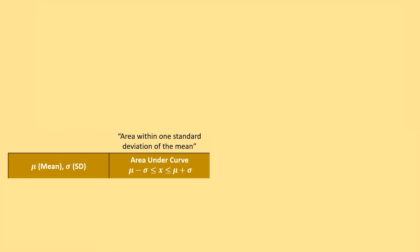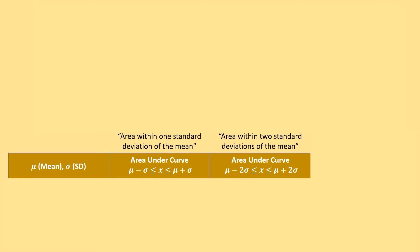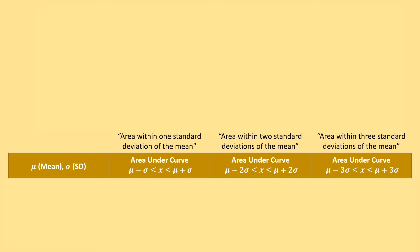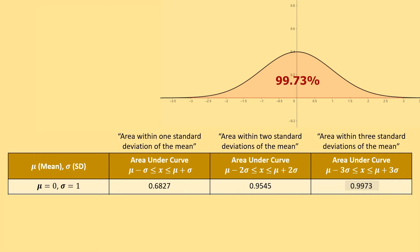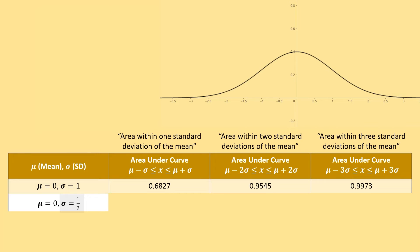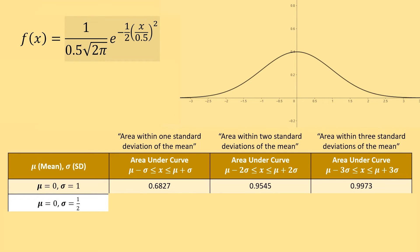Let's make a table where we vary our mean and standard deviation. The first column shows the mean and SD; the second, third, and fourth columns show the area within one, two, and three standard deviations of the mean, respectively. When mu equals zero and SD equals one, the values are 0.6827, 0.9545, and 0.9973. What if we keep the mean the same but change the standard deviation to one half? The function changes and the graph looks a little tighter.